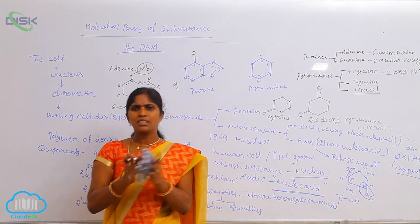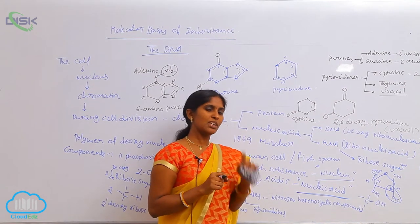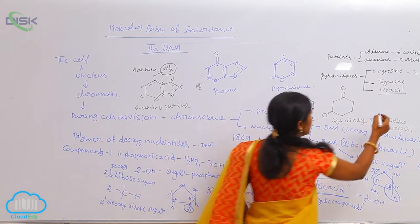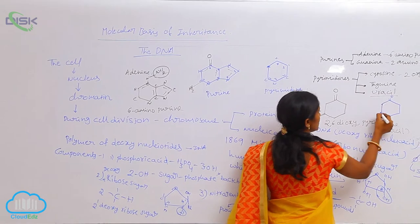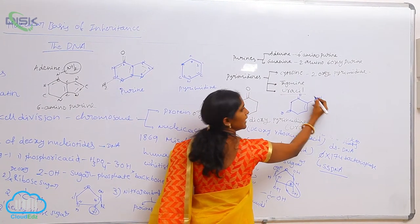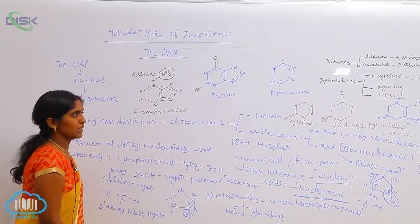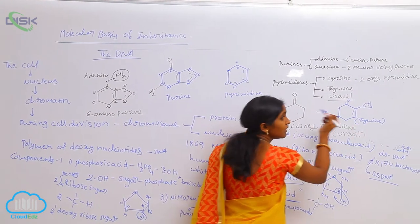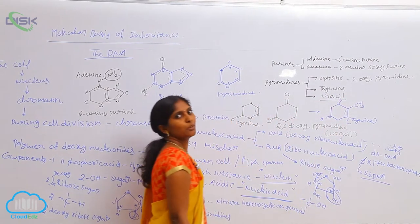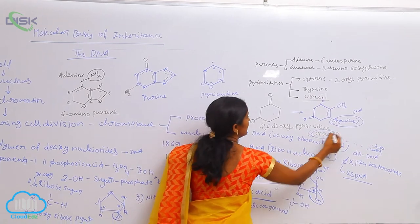Next, coming to thymine — there is a similarity between uracil and thymine. Only at the fifth position, the methyl group is present in uracil means that is written as thymine. At the uracil structure, at the fifth carbon, the methyl group is added and they turn into thymine. In uracil the methyl group is absent, whereas in thymine at the fifth carbon position the methyl group is present. The thymine is present in DNA and uracil is present in RNA.